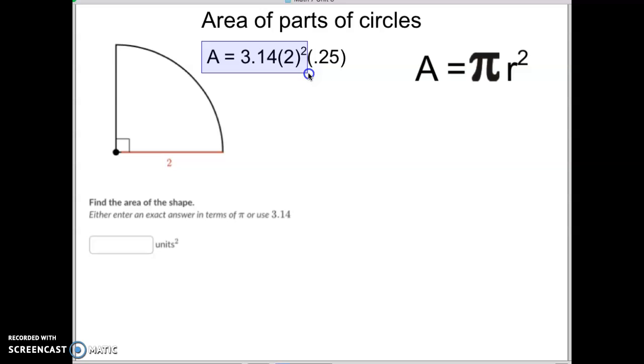But then you might notice we don't have a full circle there. In fact, we only have one-fourth of a circle. So 1 divided by 4 is 0.25, so we're going to multiply this result by 0.25 when we're done. So again, first step in order of operations, you have to do this squared part first.